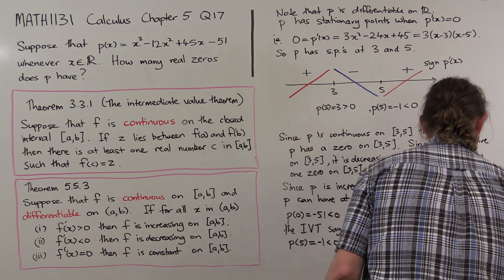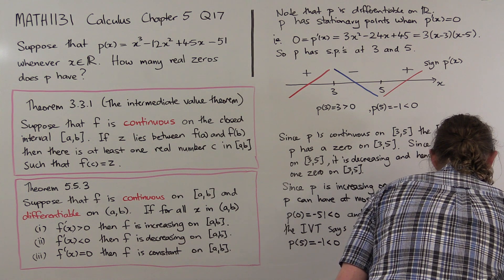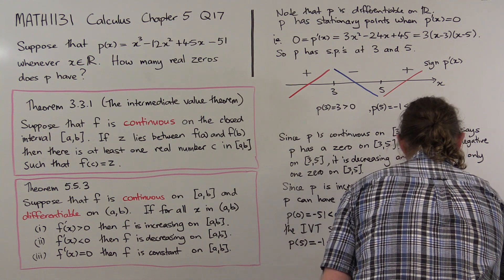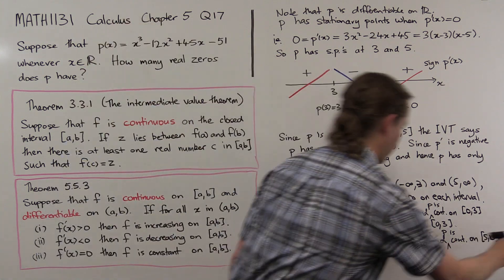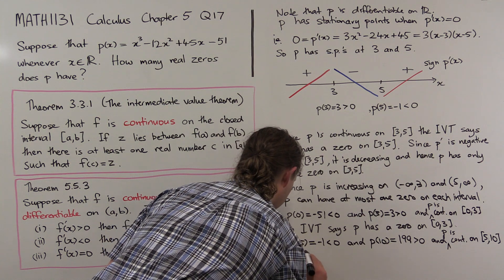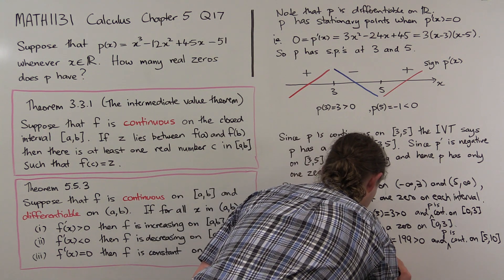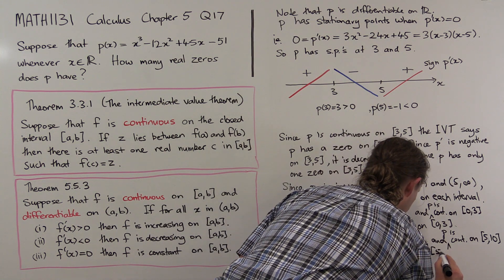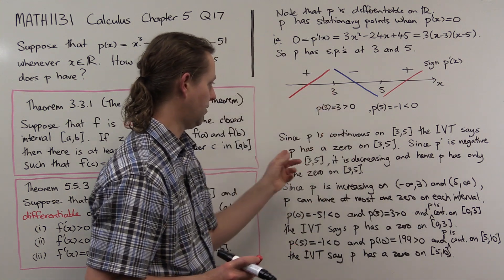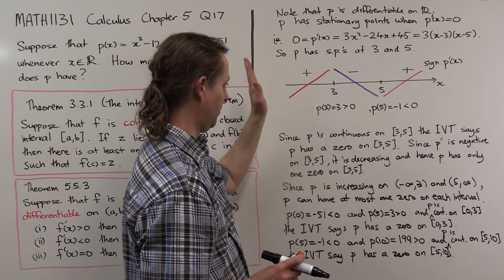P is continuous on [5, 10]. Since P(5) is negative and P(10) is positive, the IVT gives a zero on [5, 10], so P certainly has a zero on the interval from 5 to infinity. We've shown a zero on [0, 3], a zero on [3, 5], and a zero on [5, 10], with only one zero on each interval.